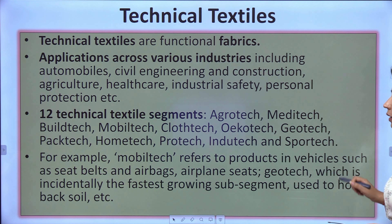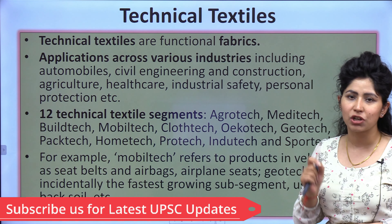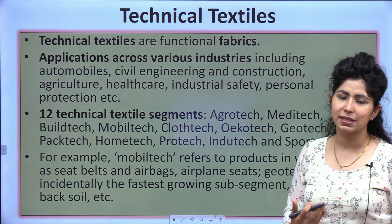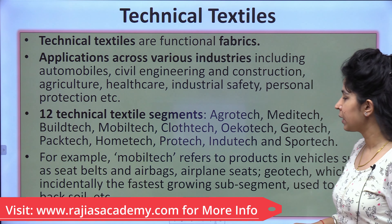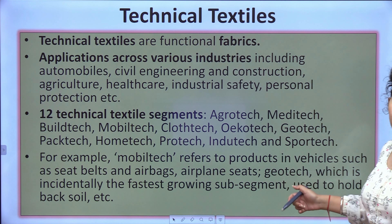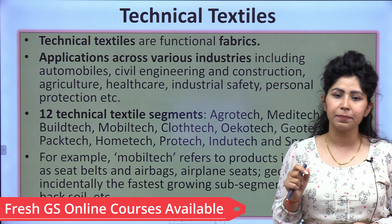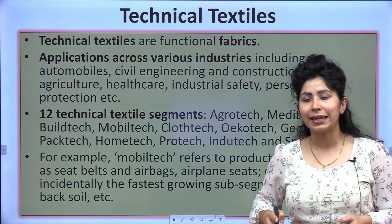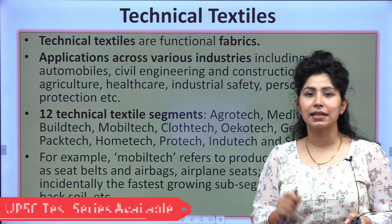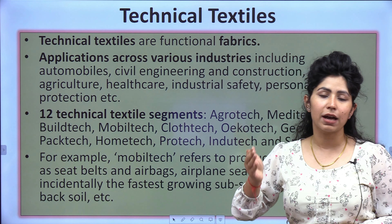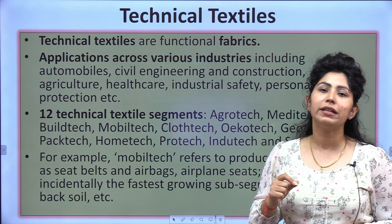Mobitech refers to products in vehicles — seat belts, seat covers — the fabric used there is a technical textile made through very complicated processes with complex machinery. Similarly, airbags and airplane seats are technical textiles. In Geotech, for example, when you cut a hill to build a road or highway in a hilly region, there is a risk of landslide around the freshly cut hill. Technical textiles can be used to cover the hill, reducing landslide risk and minimizing soil erosion.